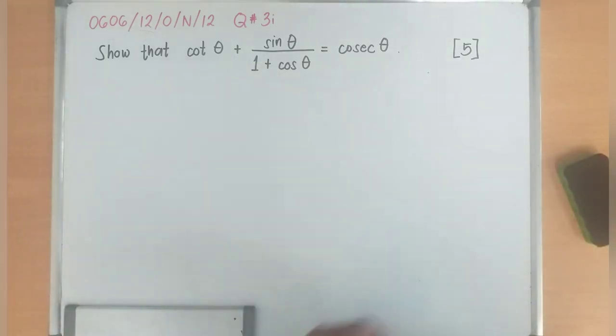This question is basically proving trigonometric identities. In proving trigonometric identities, what I always tell my students is to make everything - so one of the methods that I'm using is to make everything sine and cosine.